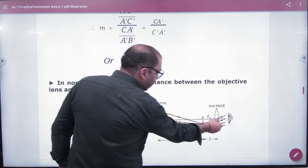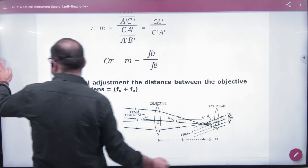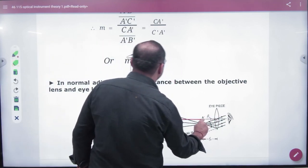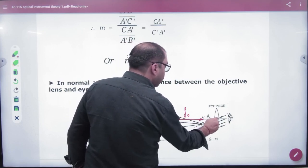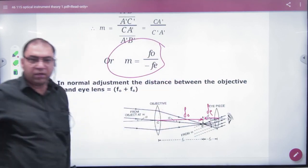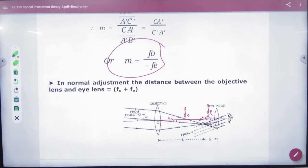Now what is C A dash? C A dash is Fe. Did you know? C A dash is Fe. So what will be magnification? F naught by minus Fe. Okay.